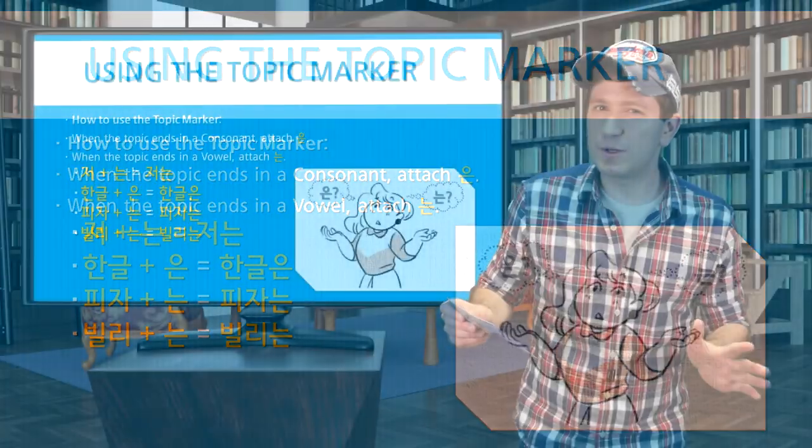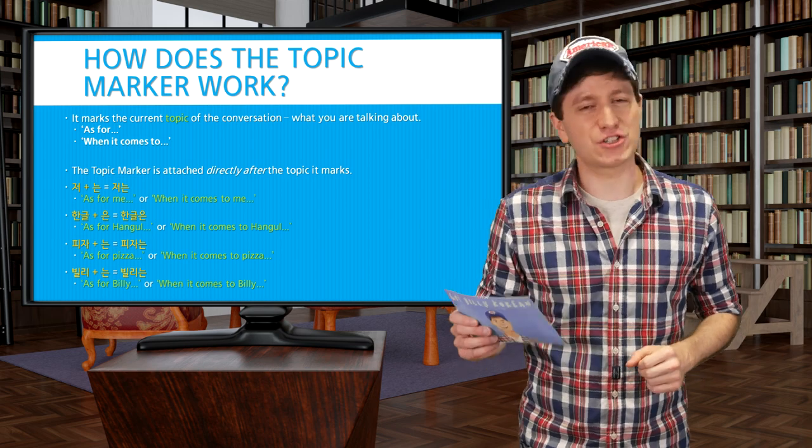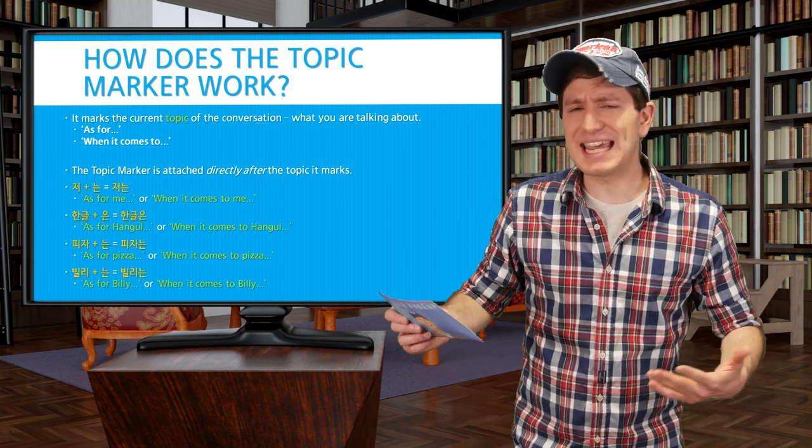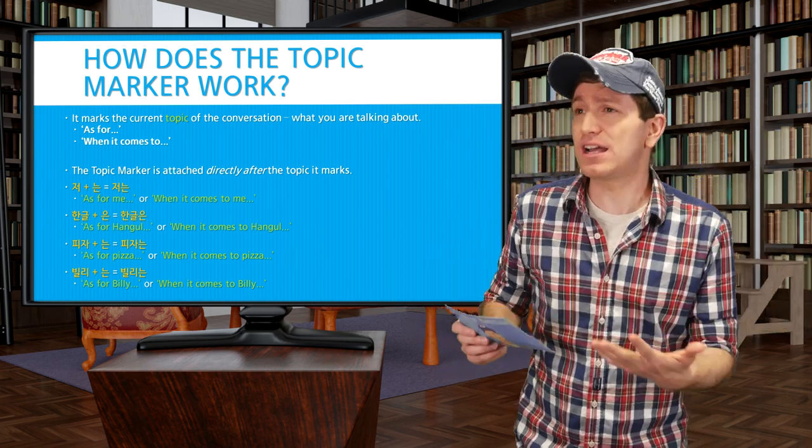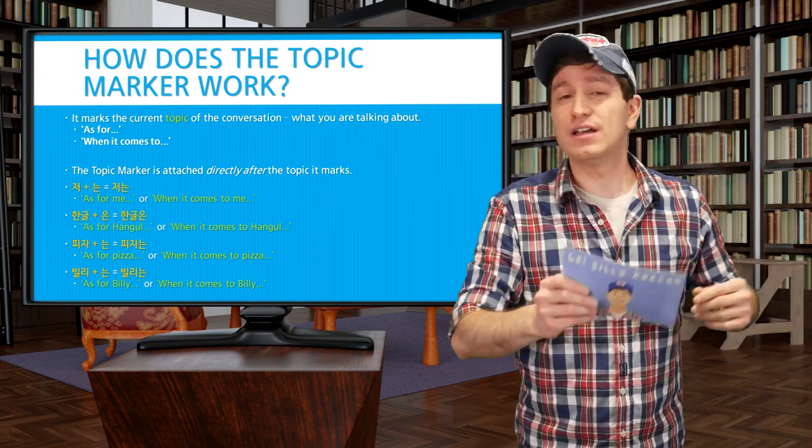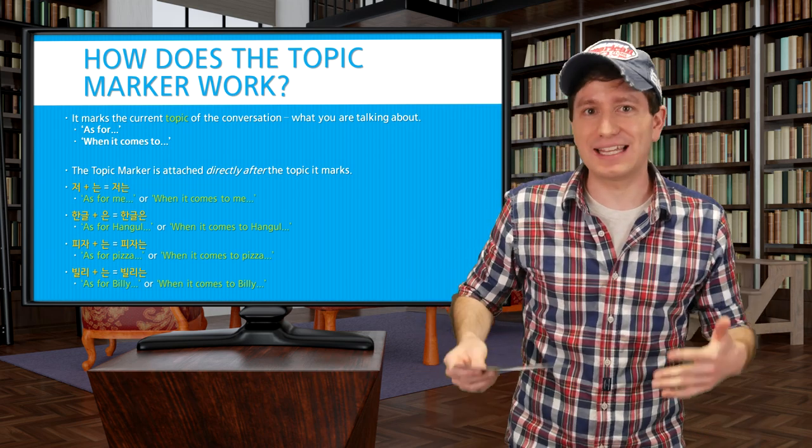So let's talk a little bit more about the topic marker. Now it really does mark the topic of whatever it is that you're talking about. You can think of this in English as meaning something like, as for that noun, or when it comes to that noun, let's talk about that noun. Some sort of meaning like that, although it doesn't translate directly into English.